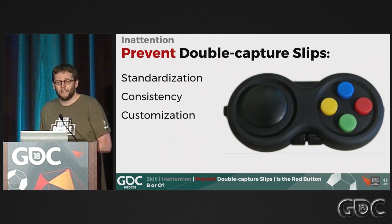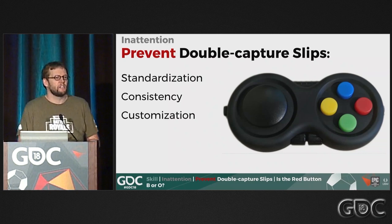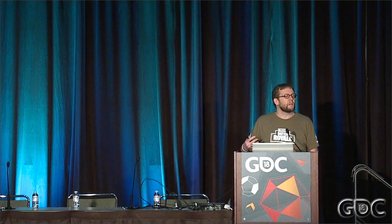To prevent double capture slips, it's relatively simple — this is why there is so much emphasis on standardization and consistency. If your game is consistent within itself or within frameworks set up by the industry, double capture slips are less likely because the strongest rule is the right rule. For example, the green button on a controller — a lot of you would say it jumps or confirms, because that's pretty much a standard. The other approach is to allow customization, which is great for accessibility and lets people bring their own strong rules.